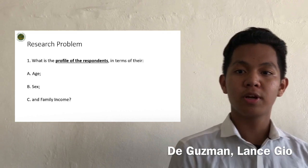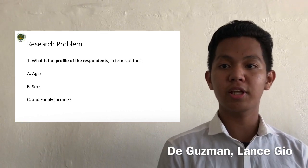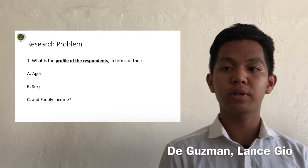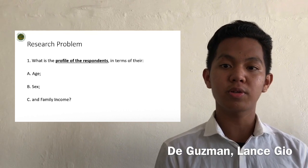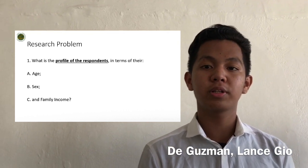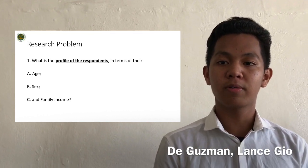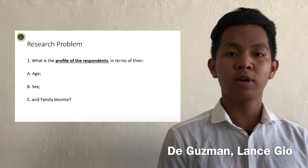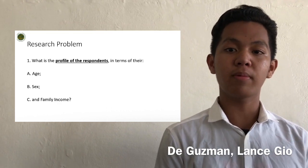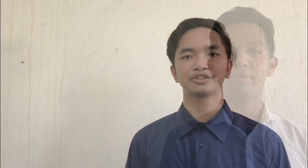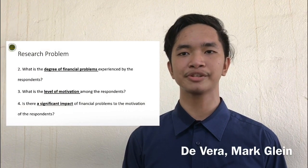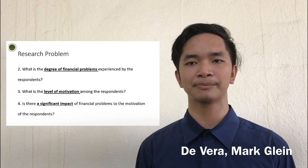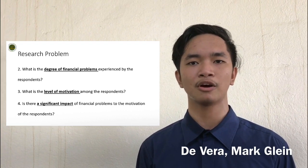In terms of age, from the 60 respondents, 39 of them were under 18 years old, and none of them were in the age brackets of 22–21, 24–23, or above 25 years old. In terms of monthly family income, from the 60 respondents, 42 of them have a monthly family income of below 15,000, while 5 of them have a monthly income of 23,000. The descriptive description of the respondents' degree of financial problem was moderate, with a descriptive equivalent of 'sometimes' and an average weighted mean of 2.92.